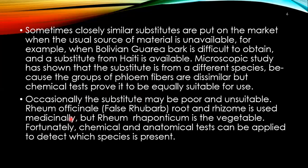Rheum officinale root and rhizome is used medicinally, but Rheum rhaponticum is the vegetable form. Fortunately, chemical and anatomical tests can be applied to detect which species is present.